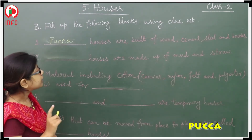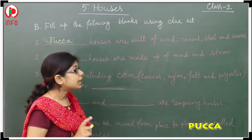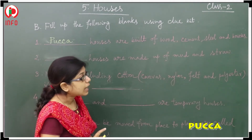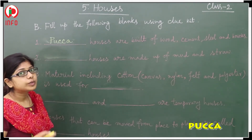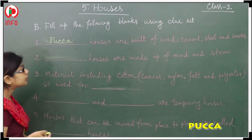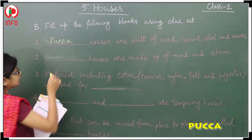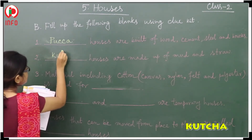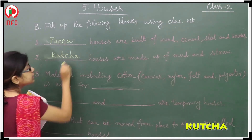Next one: dash houses are made up of mud and straw. The answer should be the kutcha house — K-U-T-C-H-A.